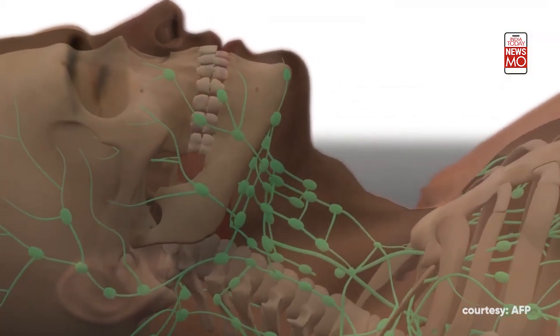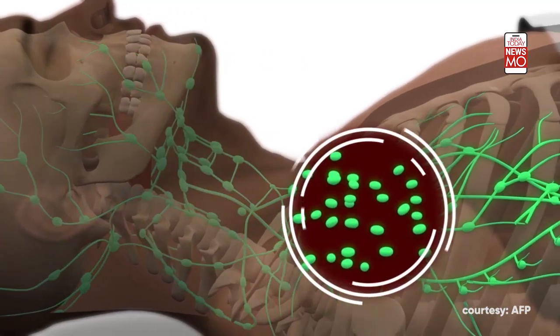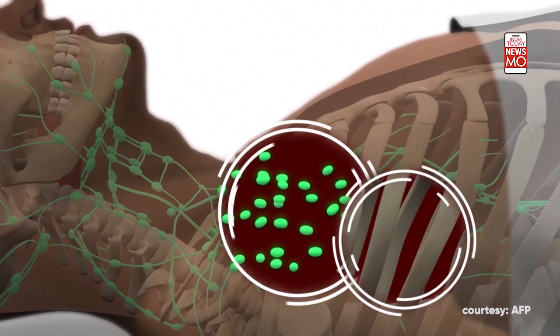These threats are remembered, recognized, and acted against the next time they appear. The key to the immune system is the lymphatic system.